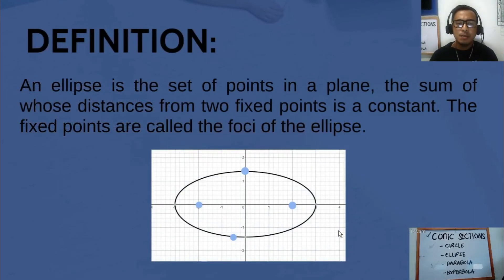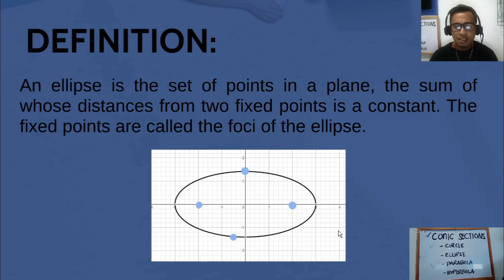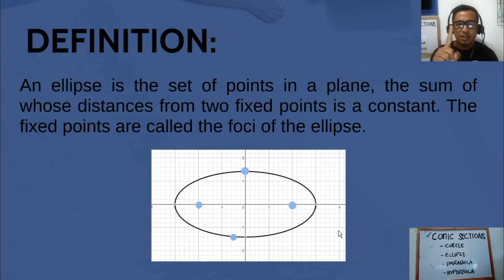An ellipse is a set of points in a plane such that the sum of the distances from two fixed points is a constant. The fixed points are called the foci of the ellipse. We have focus 1 and focus 2.